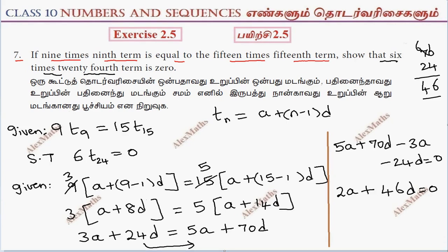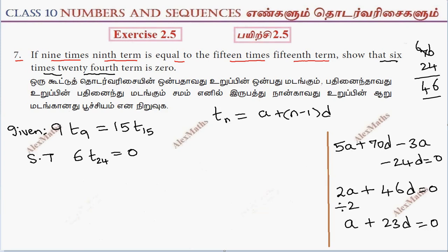Now dividing by 2, we get a plus 23d equals 0.